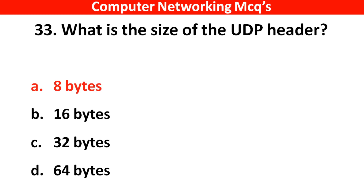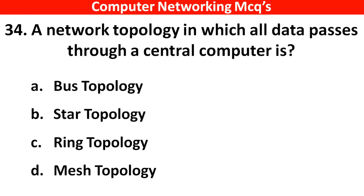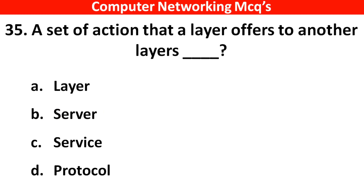Next question: A network topology in which all data passes through a central computer is? The right answer is option B — Star topology. Next question: A set of actions that a layer offers to another layer is called? The right answer is option C — Service.